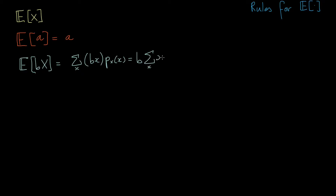We get b times the sum over x of x·P(x), which is just the definition of the expected value of x. So we can rewrite this as b multiplied by E[x]. This makes intuitive sense: if I take every possible value that this random variable takes and multiply it by some constant b, then the long-run average of bx is just b multiplied by the long-run average of x.